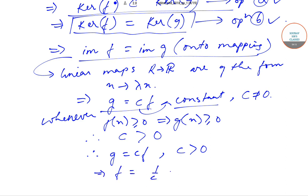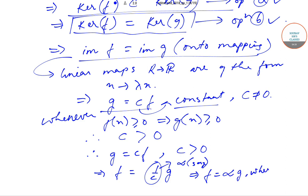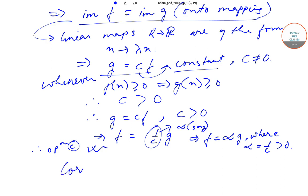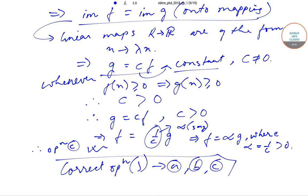So G = CF where C > 0, which implies F = (1/C)·G. Writing 1/C as α, we get F = αG, where α = 1/C and since C > 0, therefore α > 0 as well. So option C is also correct.